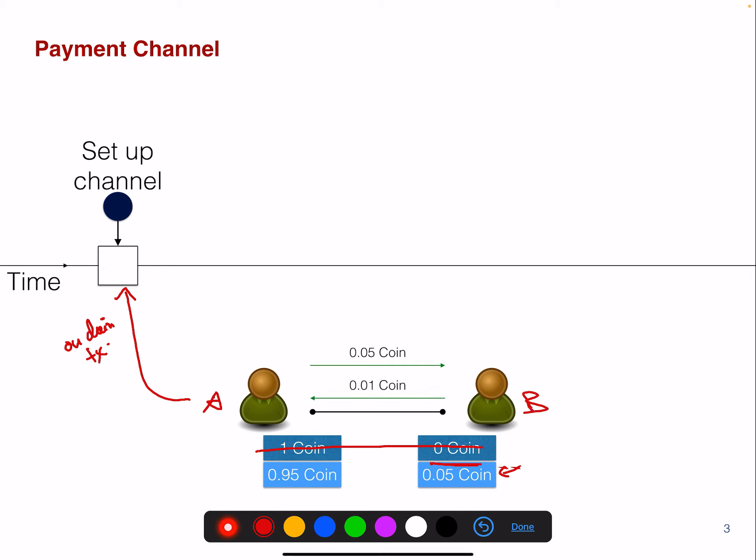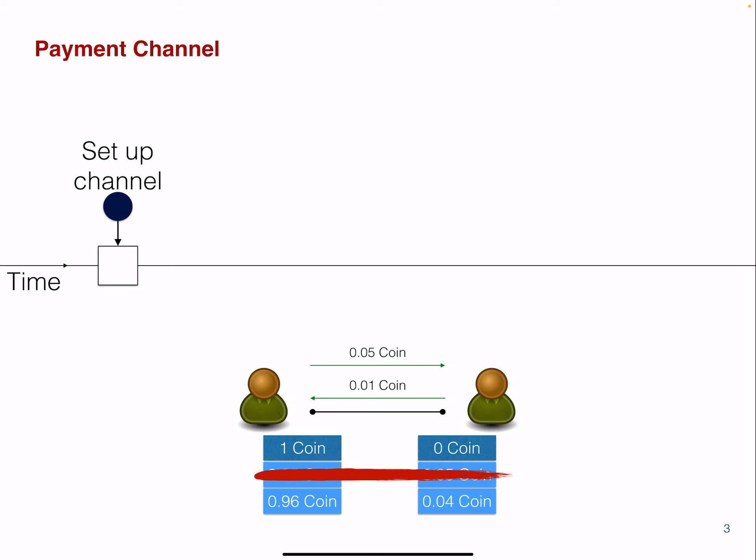Then the right guy, B, can send back 0.01 coins to A. And again, we're going to have to update the off-chain state. And this will be 0.96 and 0.04 coins.